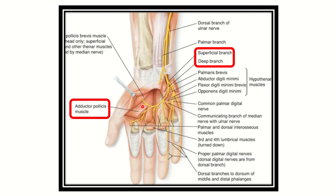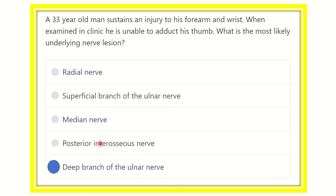In this picture we can see the adductor pollicis muscle, which causes adduction of the thumb. It is supplied by the deep branch of the ulnar nerve. Here we can see the ulnar nerve — the deep branch of the ulnar nerve supplies the adductor pollicis muscle. So our answer is: adduction of the thumb is performed by the adductor pollicis, which is supplied by the deep branch of the ulnar nerve.